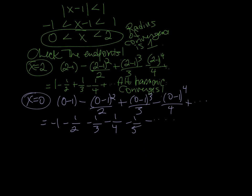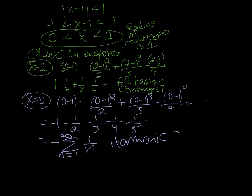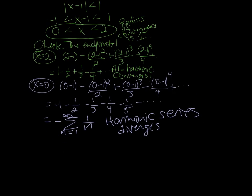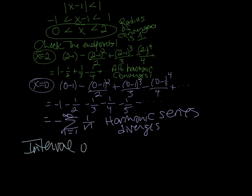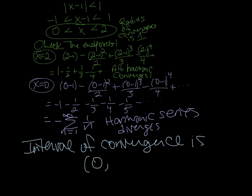This becomes negative 1 minus 1 half minus 1 third minus 1 fourth and so on — that's the negative of the harmonic series, which diverges. You could verify that the harmonic series diverges using the integral test or by noting it's a p-series with p equal to 1. Either way, it diverges. So the interval of convergence for the Taylor series for ln of x is the half-open, half-closed interval: we do not include 0, but we do include 2, giving the interval (0, 2].